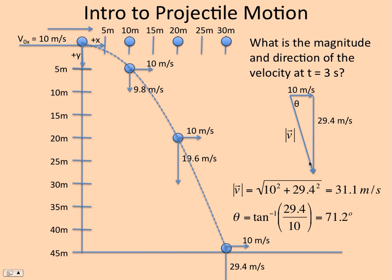To get the magnitude, Pythagorean theorem, square root of the sum of the squares. You should know how to do this. One thing you've got to watch, though, the 71.2...